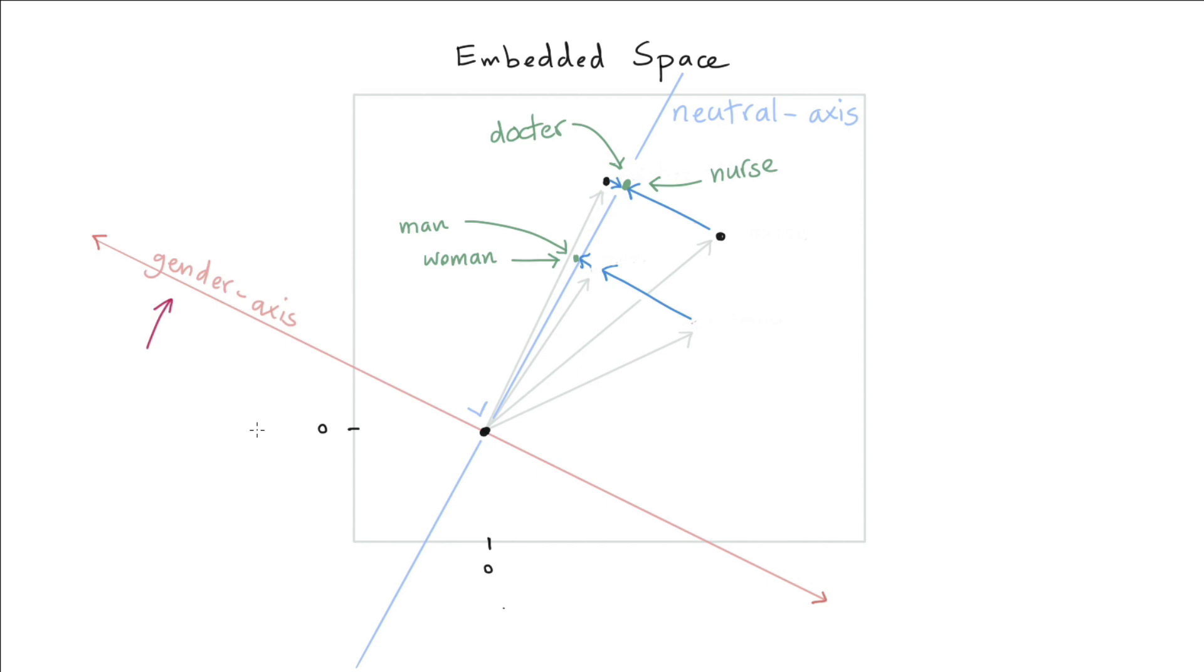Now in this visualization, we're doing everything in two dimensions. Usually when we're dealing with word embeddings, then they're not two dimensional. Typically, they're more like 300 dimensions, but the linear algebra can still be applied. Instead of projecting onto a line, you might be projecting onto a hyperplane. But that's a mathematical detail that I don't want to get too much into. This idea, projecting away from an axis, that remains the same, also in high dimensions.